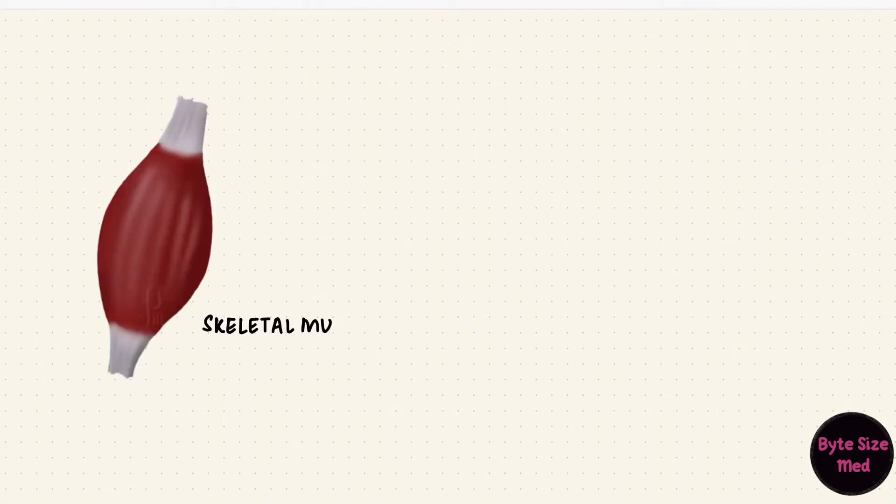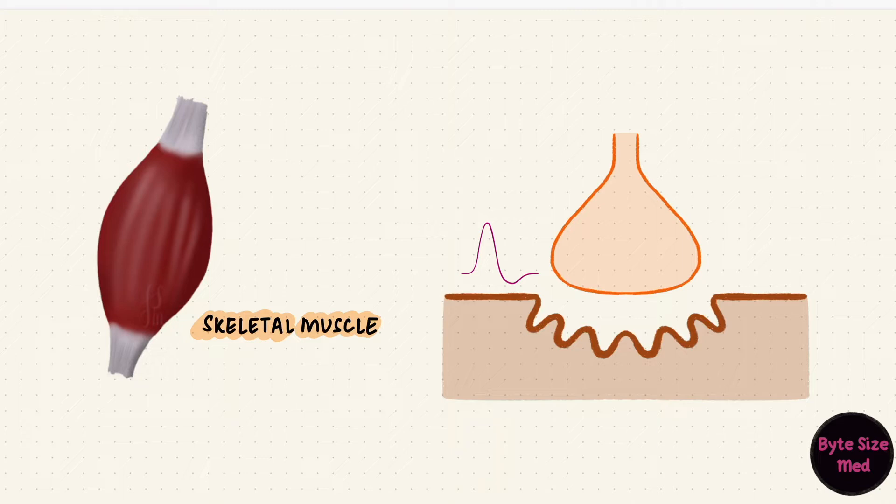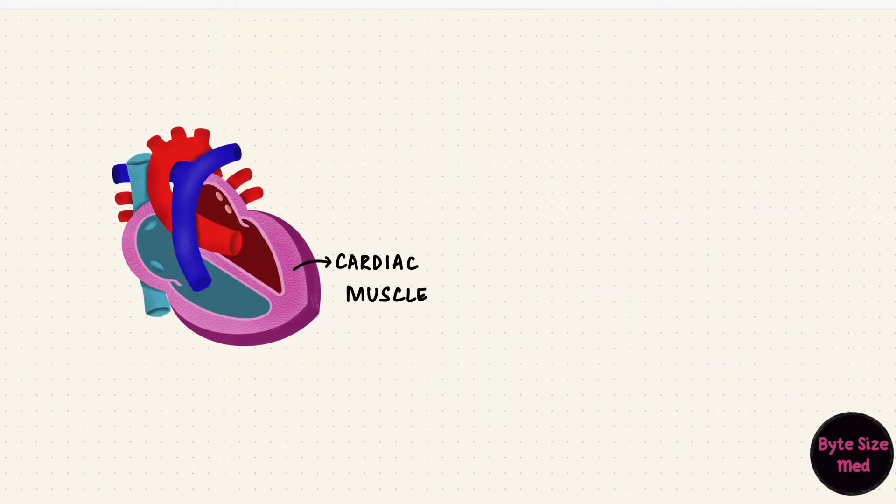In skeletal muscles, what initiates contraction is an action potential generated from a neurotransmitter released from a nerve that supplies it. Cardiac muscle contraction is not initiated by nerves. The autonomic nerves that supply the heart can modulate contraction but they don't initiate it.